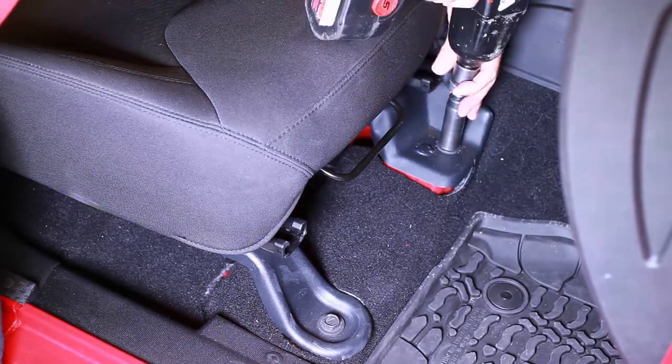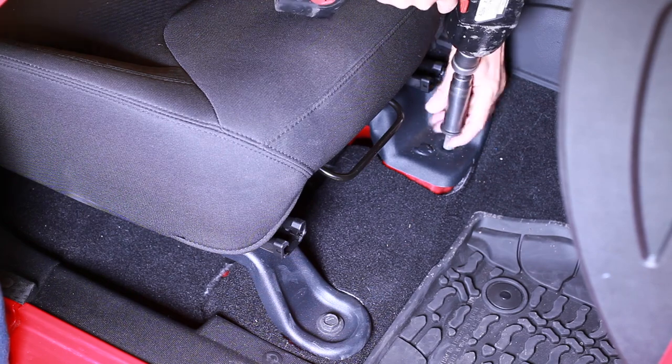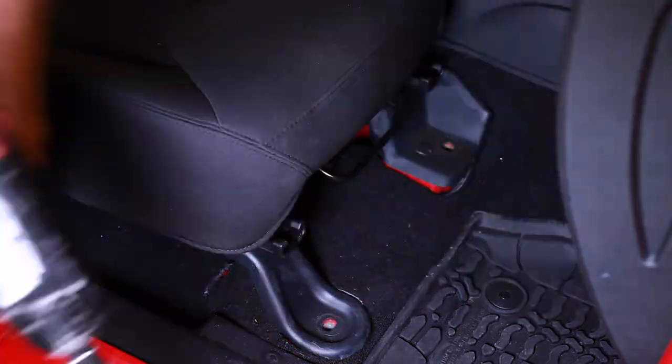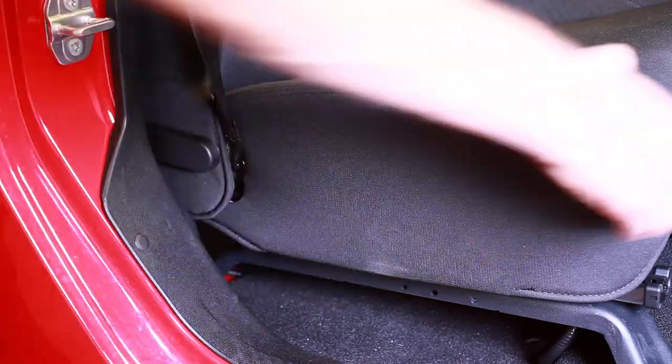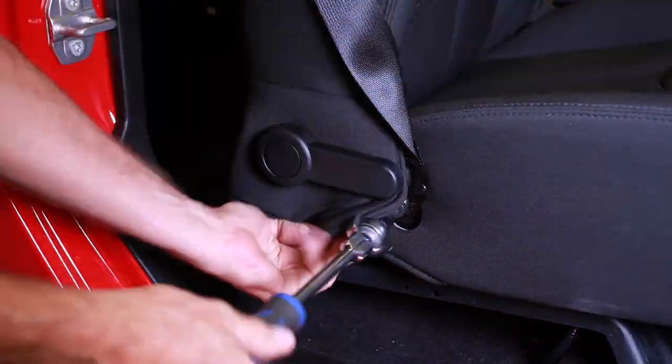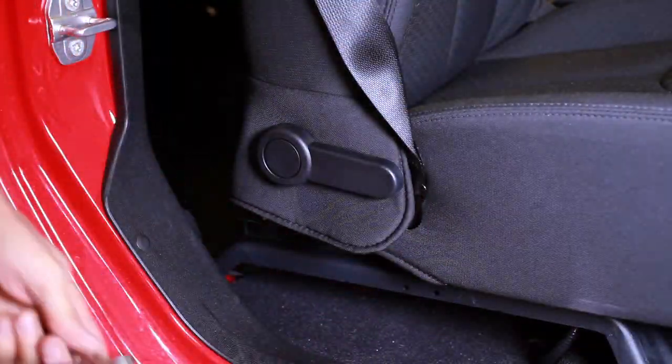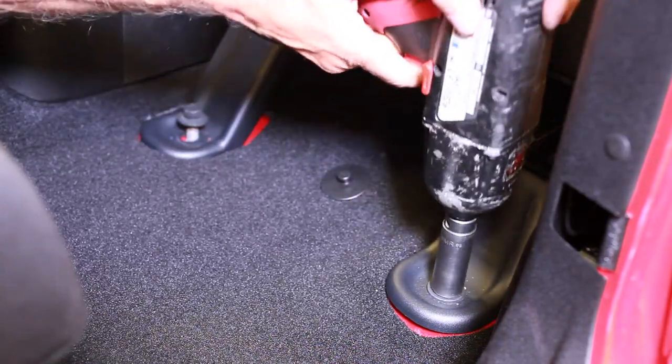With the seat still pushed back, remove the two 18 millimeter seat mounting bolts. Slide the seat forward and remove the seat belt bolt. That'll take a T45 torque. Remove the remaining two seat mounting bolts.